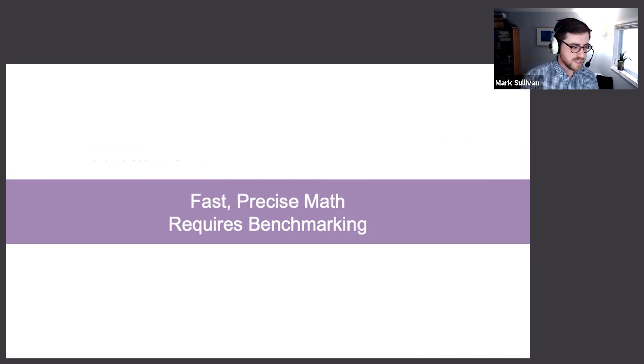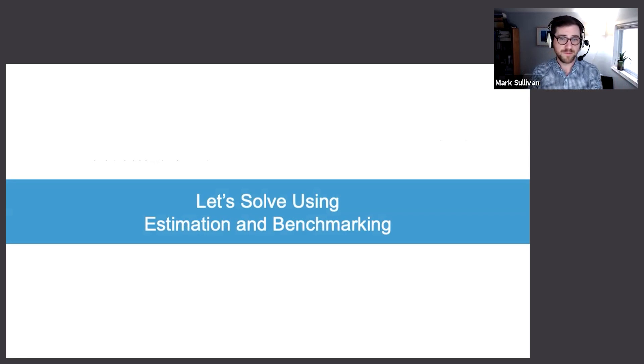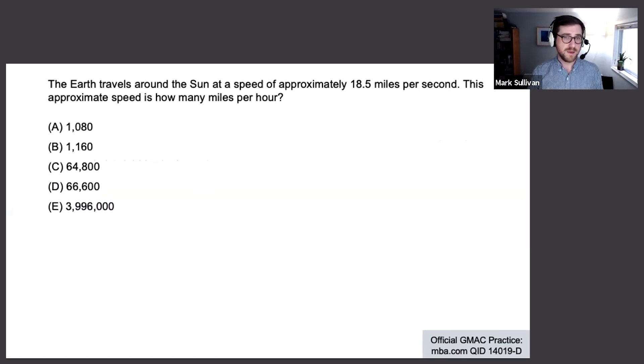All right. So remaining precise while being fast often requires breaking your difficult computations down into multiple easier computations. Let's see if we can get all of these ideas to pay off in a single problem. We're going to use both estimation and benchmarking here. What do you think? Did you stick to that beginning of problem routine? Try to train that as an instinct. Again, pen down, deep breath, problem solving or data sufficiency. This is problem solving, so eyes on the answer choices.